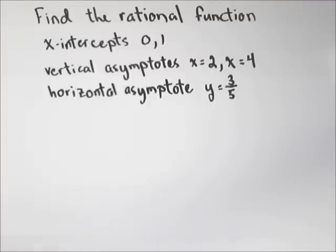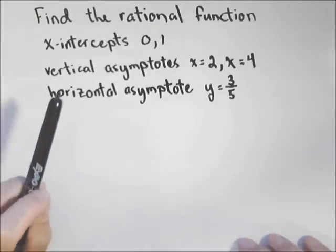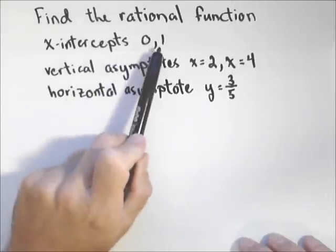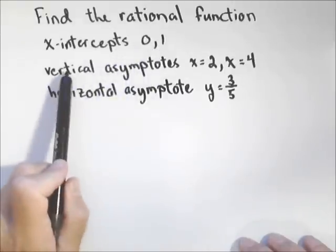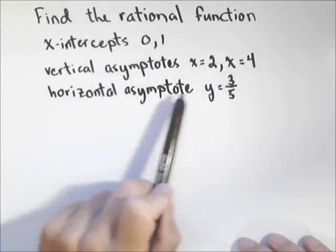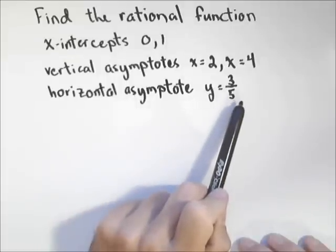So in this video, we want to find the rational function with the following attributes: x-intercepts at zero and one, vertical asymptotes at x equals two and x equals four, and horizontal asymptote at y equals three-fifths.